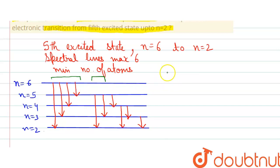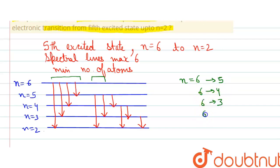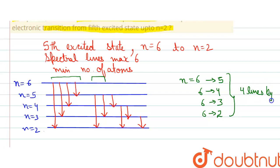We will need only two atoms. For n equals to six, if the electron moves to n equals to five, this is one spectral line. Then from six to four, six to three, and six to two — so these are four spectral lines that can be produced by one atom.